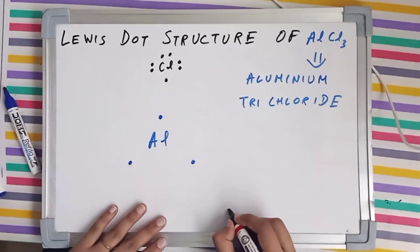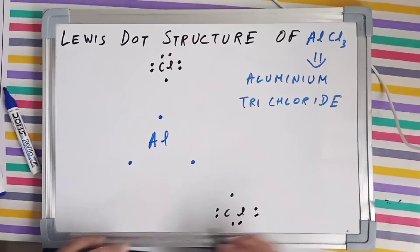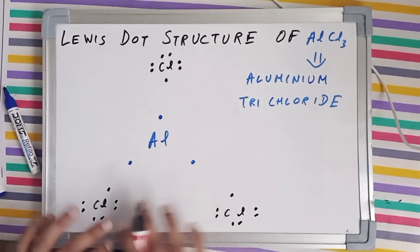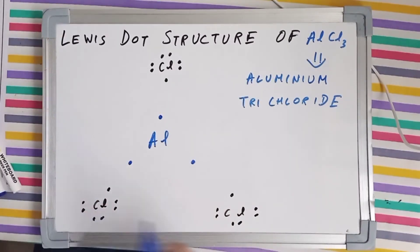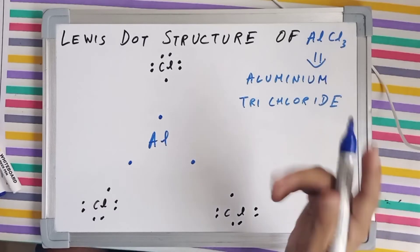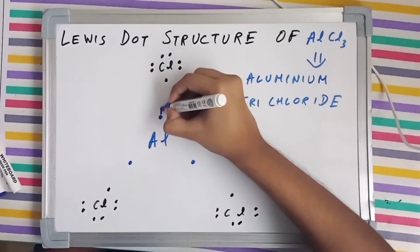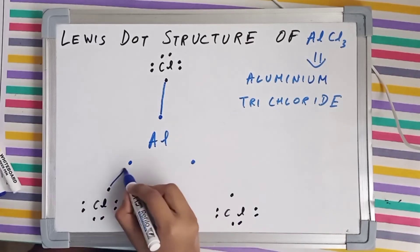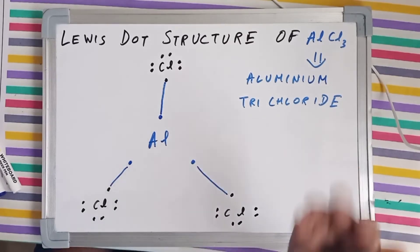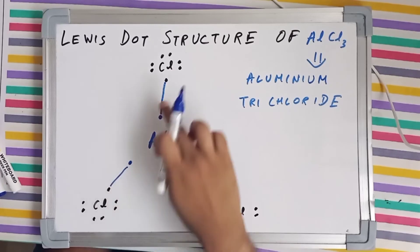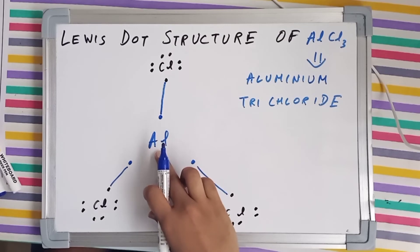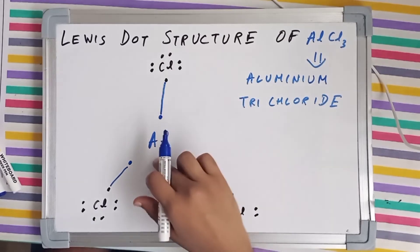Chlorine has seven valence electrons, and similarly we have two more chlorines, each also having seven valence electrons. Chlorine needs just a single electron, so it will make a single bond with aluminium. Each chlorine will make just a single bond with aluminium, and since aluminium had three unpaired electrons in its excited form, it makes three covalent bonds. This is the structure of AlCl₃.